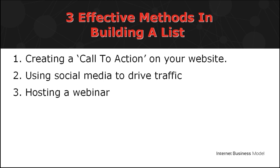There are three effective methods to start creating your own list: 1. Creating a call to action on your website. Your website can be your traffic generator — allow visitors to sign up for a newsletter on the sidebar or footer, or have a pop-up asking them to sign up. 2. Using social media to drive traffic. Social media serves as a traffic generator — people click links directing them to your website or content, and from there you can ask them to sign up for your newsletter. This can be done through Facebook ads, Twitter ads, and other social media platforms. 3. Hosting a webinar. A free webinar is all it takes to expand your list — provide valuable content related to your niche and ask attendees for their email to receive materials.